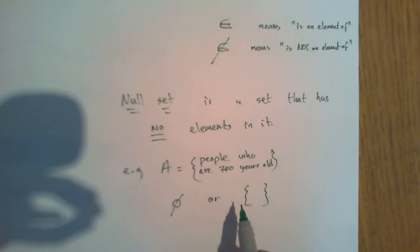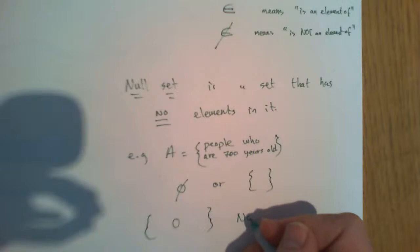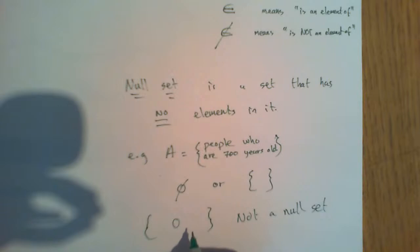What's very important is this: if you're asked about a set and you see a set like curly brackets with a zero in it, that is not a null set because zero is something. Zero is a real number, it exists in the real world, and a null set is the absence of anything that could be in there.